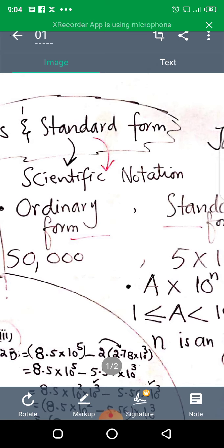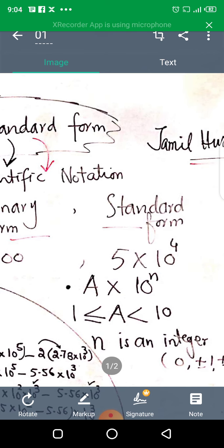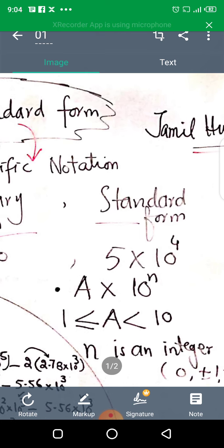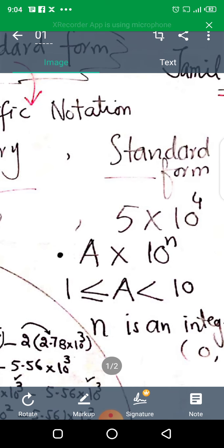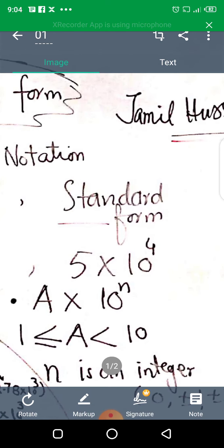Ordinary form is like suppose 50,000, which we normally use as numbers. Standard form is 10 raised to power, but keep in mind the standard form is A multiply by 10 raised to power n. This is important: A will be greater than or equal to 1 and less than 10.